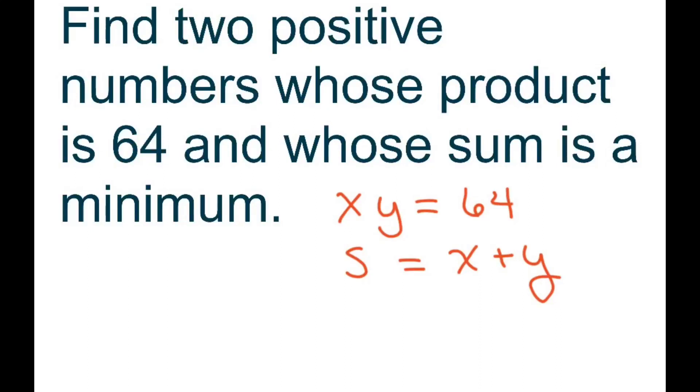Hi, everyone. We're going to find two positive numbers whose product is 64 and whose sum, which we're going to let be S, is a minimum.